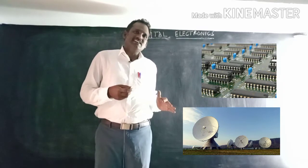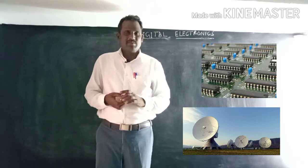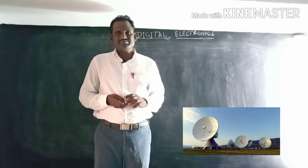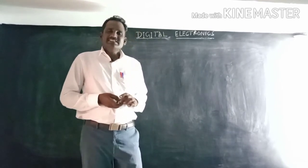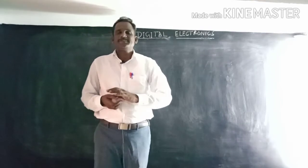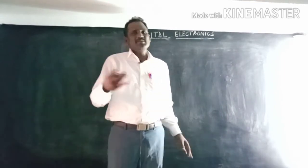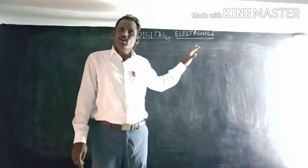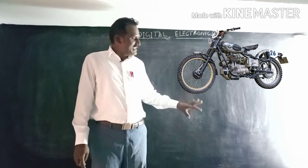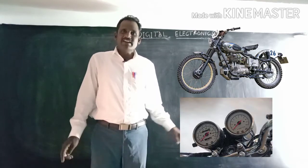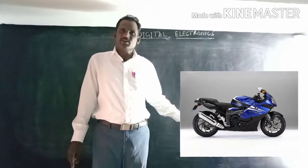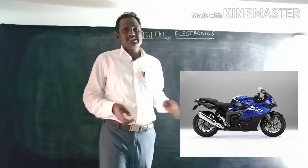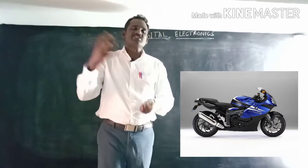Digital electronics has changed not only media, broadcasting stations, audio and video communication, but also the automobile industry. In older motorcycles, analog speedometers were used. In modern-day bikes, analog speedometers are completely replaced by digital speedometers showing speed in kilometers per hour.